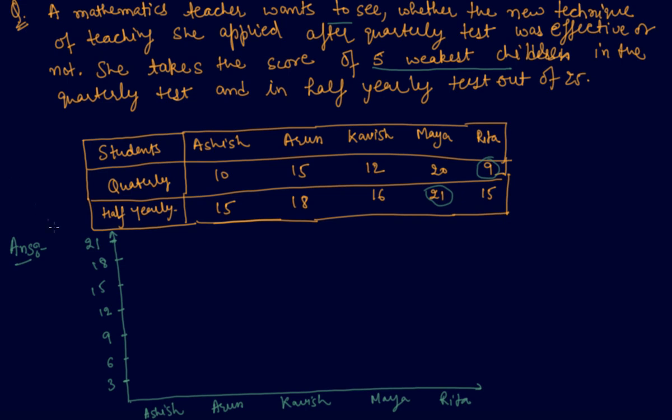Now I will draw the quarterly and half yearly bar graphs of each of the students. So first I will take a different color to draw quarterly. For quarterly, I will choose red color. So for Ashish, quarterly marks is 10. So 10 will lie something here. So I can draw a bar graph of 10 here. And for Arun, it is 15. So for Arun, the bar graph is like this.